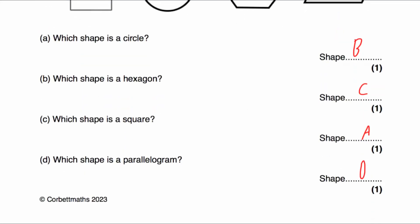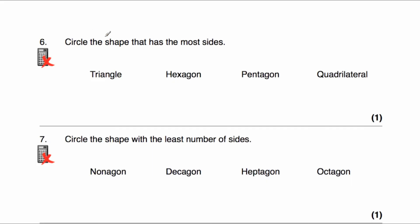Question number six: circle the shape that has the most sides. We've got a triangle with three sides, a hexagon with six sides, a pentagon with five sides, and a quadrilateral with four sides. The shape with the most sides is the hexagon, so I've circled the hexagon.